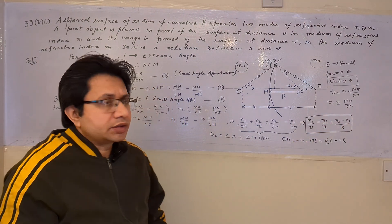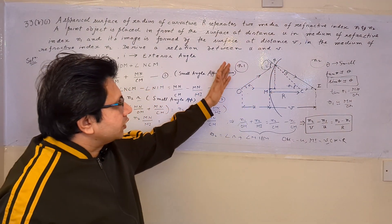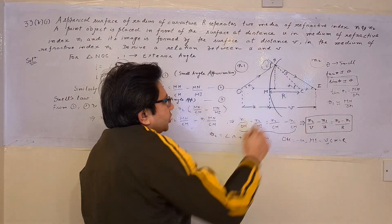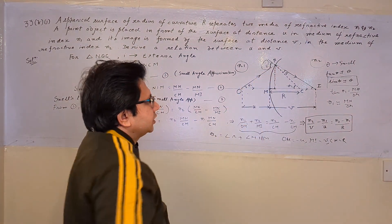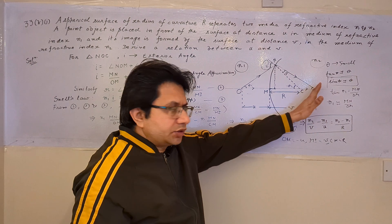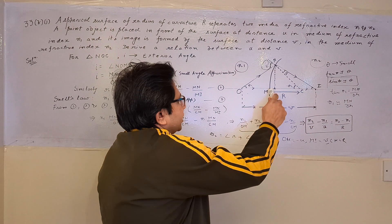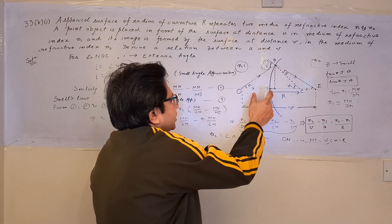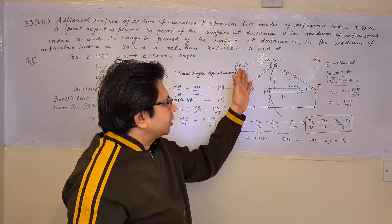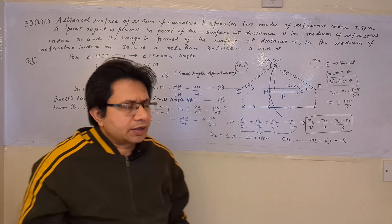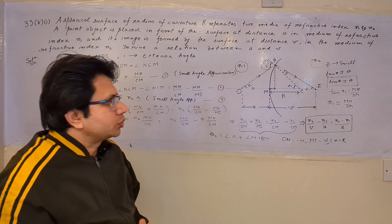Now let me explain the whole thing in Hindi. This is the boundary separating medium n1 and n2. An object is placed in medium n1; the ray strikes the boundary and forms an image in medium n2. We have to establish a relationship between the object distance u, the image distance v, and express it in terms of n1, n2, and R. This is a geometry-based problem with some approximations.